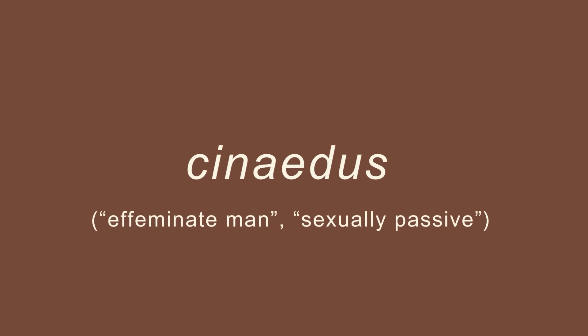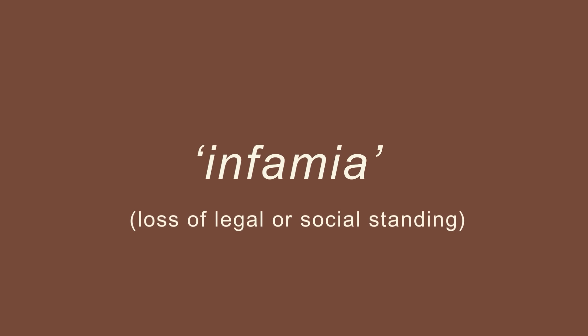So you can blame the Romans for your Tinder date's poor performance. One of the harshest insults you could receive was being called a 'cinaedus,' a derogatory term for an effeminate man or someone perceived to be passive in homosexual relationships. In ancient Rome, accusations of sexual immorality could lead to legal action. The concept of 'infamia' — loss of legal or social standing — was significant, and being labelled with certain insults could affect someone's status.